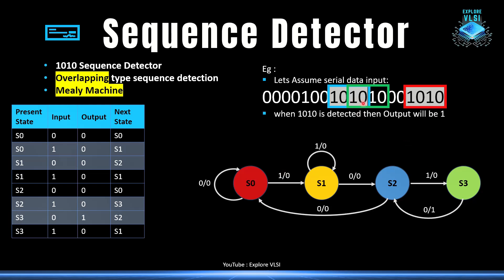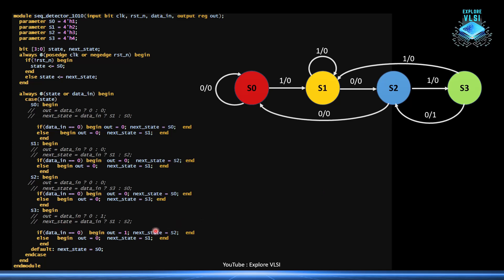After detecting the last zero in S3, output is one, but instead of going back to S0 we go to S2 — because we already have one zero detected and are expecting another one zero. In S2, if zero comes we return to S0; if one comes in place of the fourth bit, we go back to S1. In the Verilog code, the only change is in S3: when zero is detected, next state becomes S2 instead of S0. This single change makes the detector behave as overlapping.